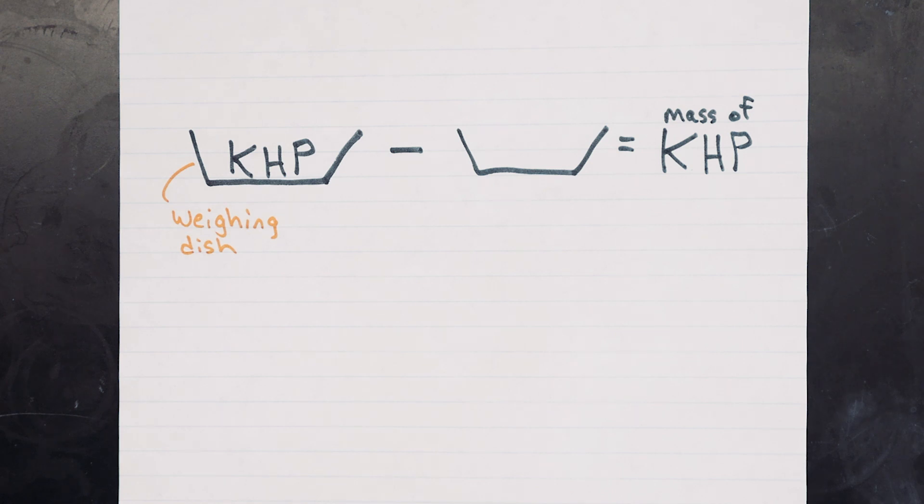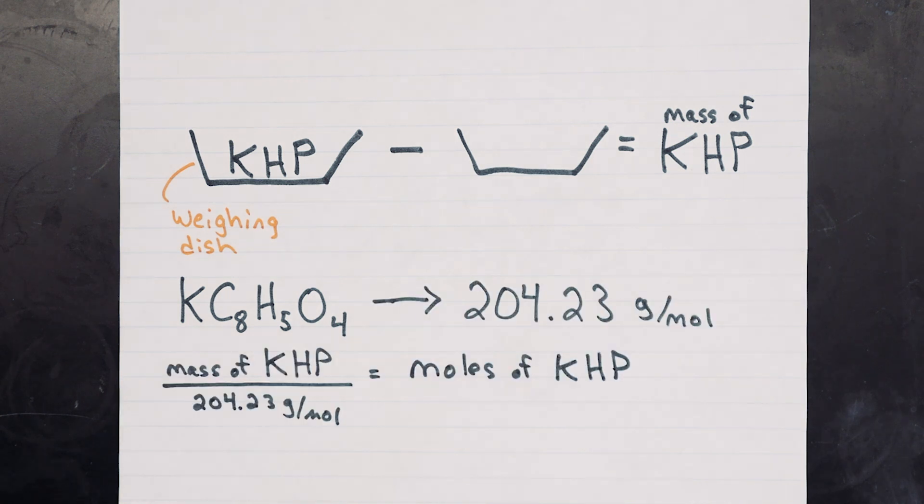KHP is the formula KC8H5O4, so we can calculate the formula weight and use it to determine how many moles of KHP we had, since we know the mass accurately.